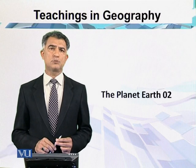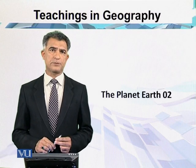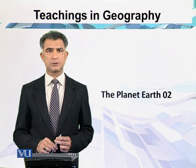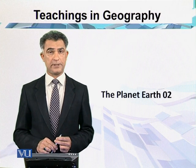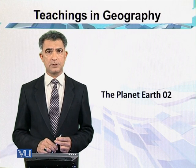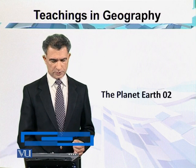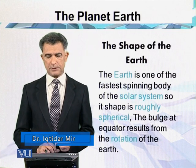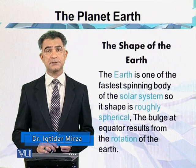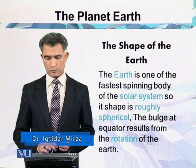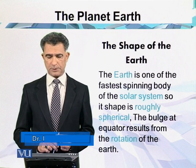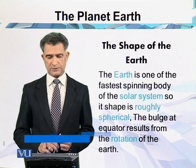The earth is almost a sphere. It is slightly flattened at the poles but has a bulge at the equator. When we are talking about the shape of the earth, the earth is one of the fastest spinning bodies of the solar system, so its shape is roughly spherical.